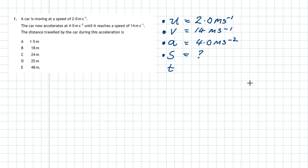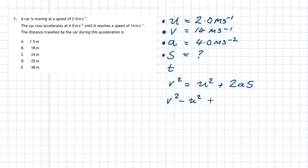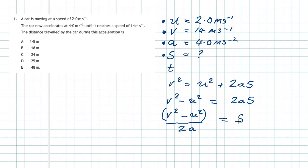Which kinematic equation are we going to use? The one we're using in this case is v² = u² + 2as. The next key skill is rearranging that equation to solve for s. We take v² minus u², bring it to one side equal to 2as, then divide by 2a — putting a bracket around v² minus u² divided by 2a — to give us a value for s. Practice that reorganization until you can do it almost without thinking.